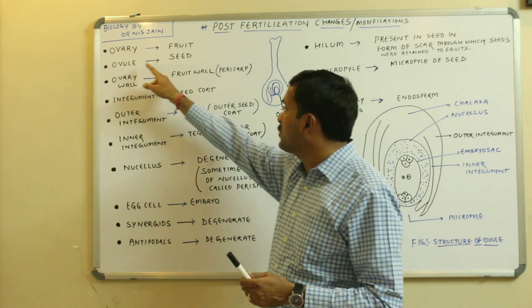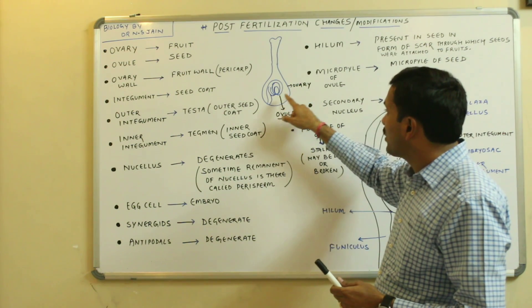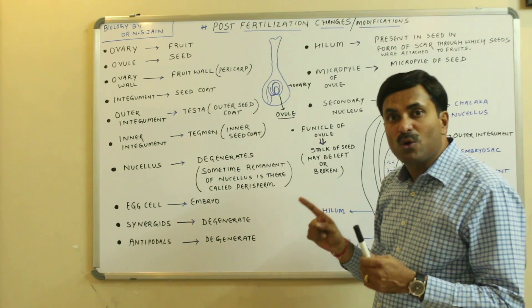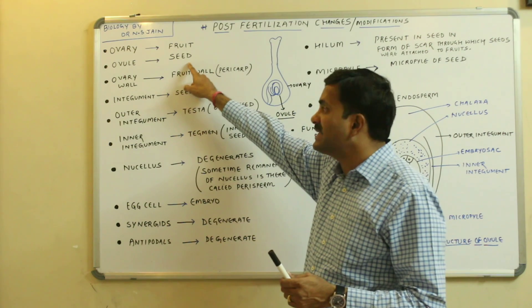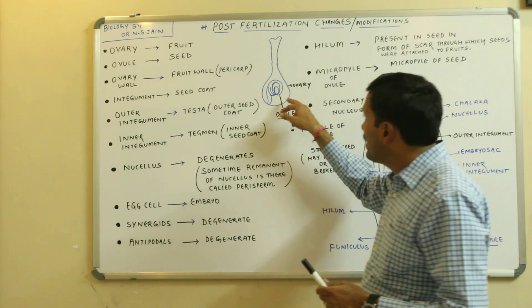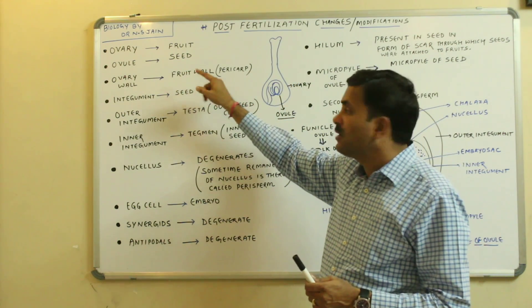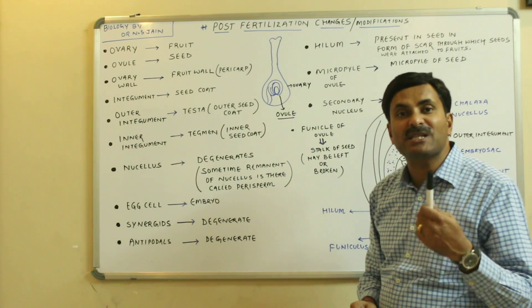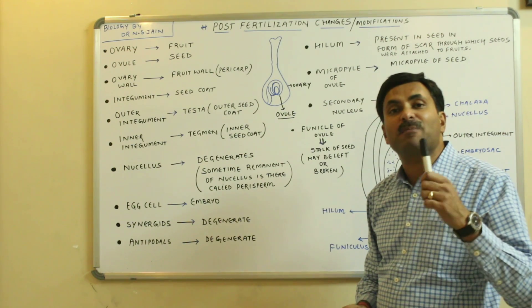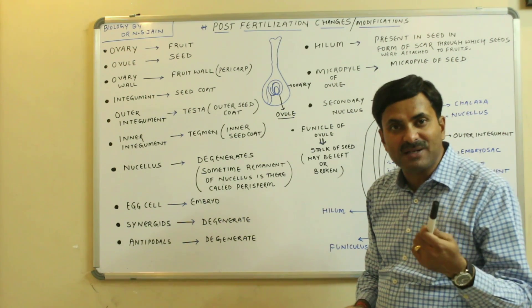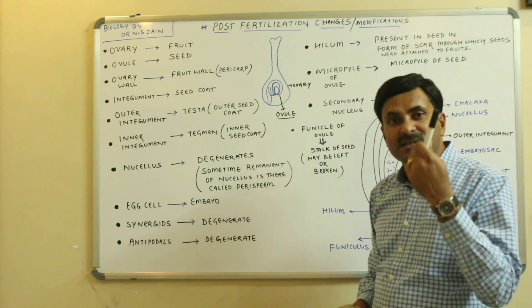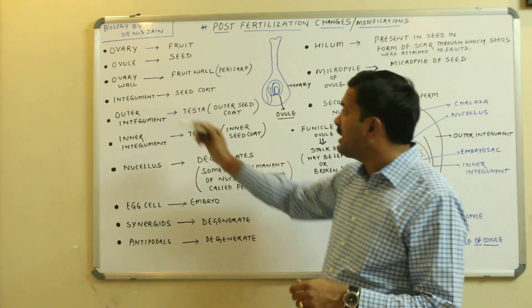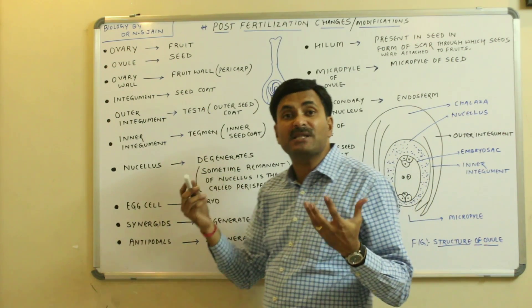Next is the ovule. We know that inside the ovary, the ovule is found, but after fertilization the ovule is converted into the seed. The ovary wall is converted into the fruit wall, also called the pericarp. The pericarp may be differentiated into three parts: outer, middle, and inner — called epicarp, mesocarp, and endocarp.